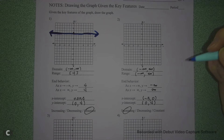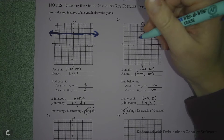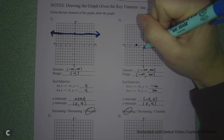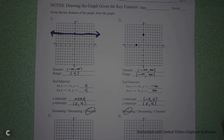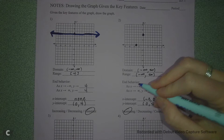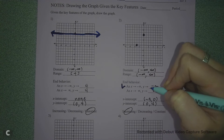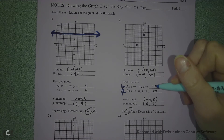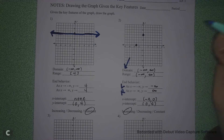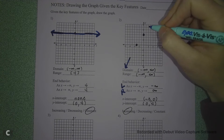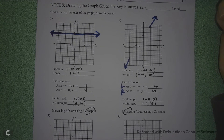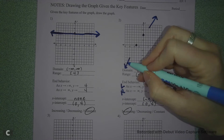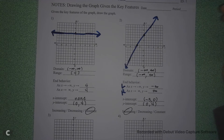Number two. Start with the intercepts. I need a dot at (-3, 0) and a dot at (0, 4). So my line is going to cross through those dots somehow. My end behavior on the left-hand side is going negative infinity, and on the right side I'm going positive infinity. I don't have too much other information other than it's increasing, so it looks like my line just kind of goes through those two dots.